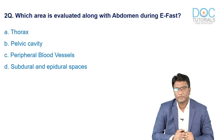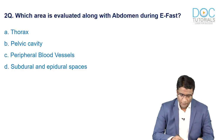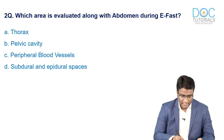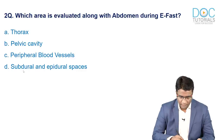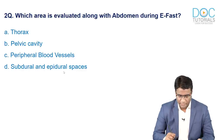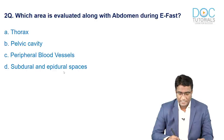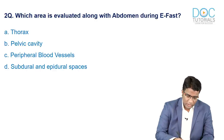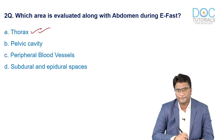Next question: which area is evaluated along with the abdomen during eFAST? Thoracic cavity, pelvic cavity, peripheral blood vessels, or subdural and epidural spaces? Along with the abdomen during eFAST, we also evaluate the thoracic cavity. So the answer is thoracic cavity.